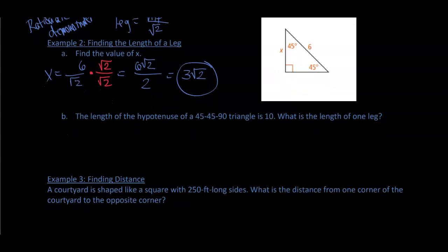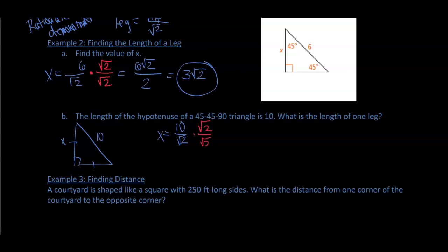We can do another one. If we have a right triangle with a hypotenuse of ten, x equals ten divided by the square root of two. We multiply by the square root of two on the top and bottom, giving us ten square root of two over two, which simplifies to five times the square root of two.